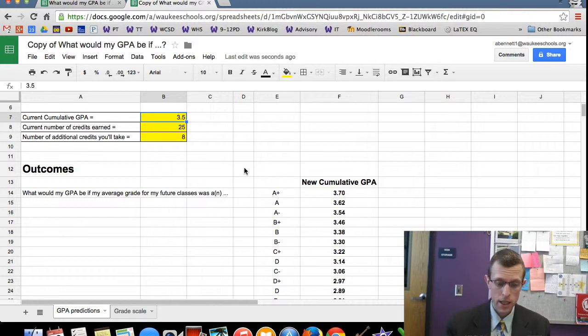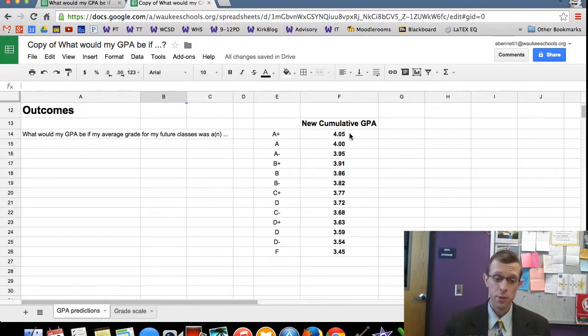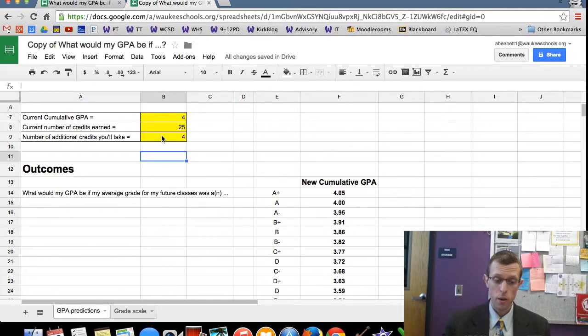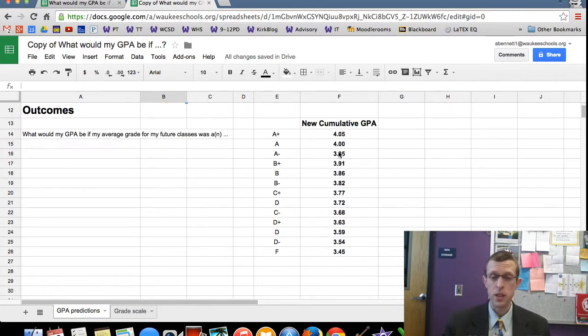Current Cumulative GPA, I can change that—we have a 4.0 to begin with—number of credits earned, and we can adjust this a little bit and see the possible outcomes after another four credits worth of classes, what our GPA is going to get to.